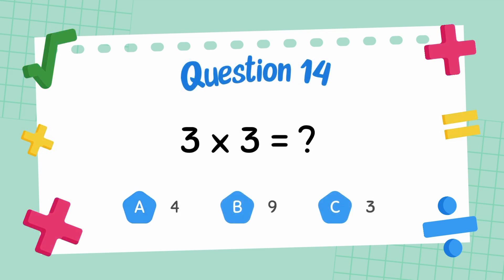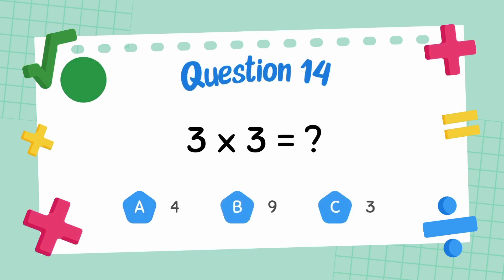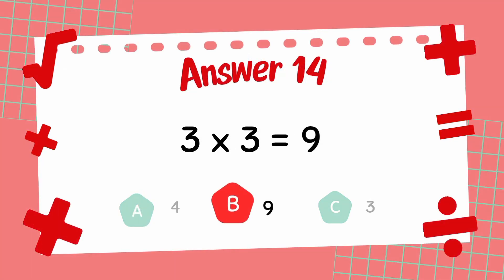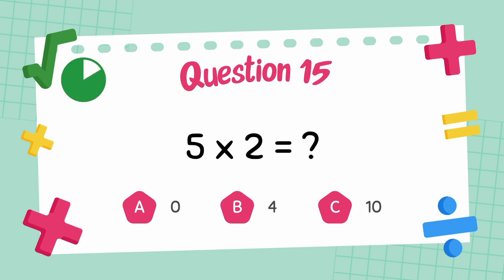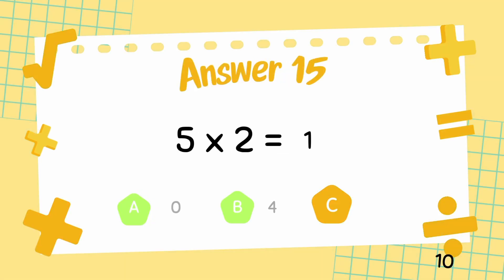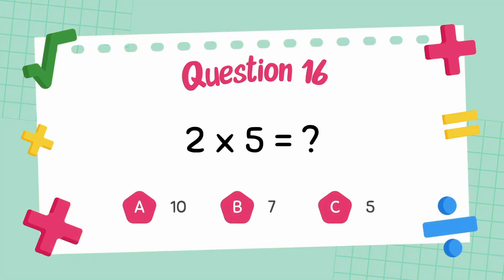What is 3 multiply 3? The answer is 9. What is 5 multiply 2? The answer is 10. What is 2 multiply 5? The answer is 10.